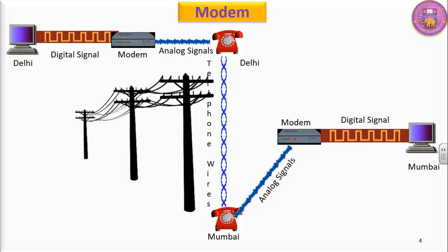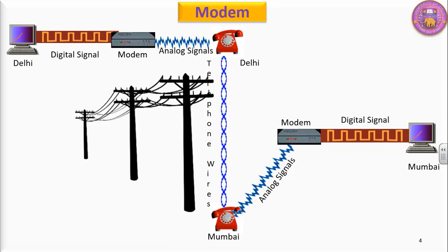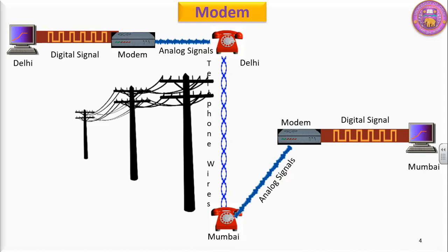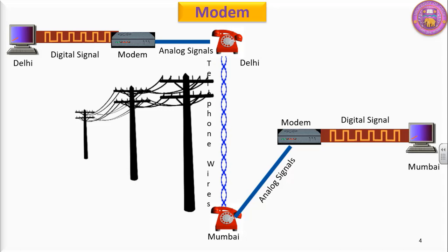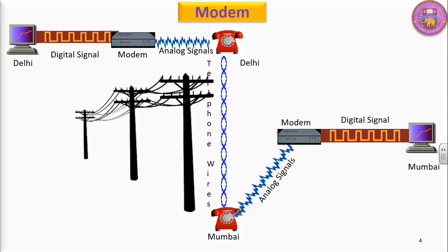This modem first converts the digital signal into analog signal, and after that the analog signals are reconverted into digital signals. So we made use of already laid-down telephone wires. This is the basic crux of modem: it is a device which converts digital signal to analog signal and then analog signal to digital signal, so that two computers can communicate with each other using telephone wires.